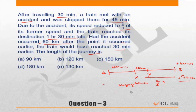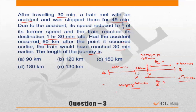First, there is a stoppage of 45 minutes after the accident at X, and similarly a stoppage of 45 minutes after the accident at Y. The speed after the accident is 2/3 of the original speed S, so the speed in that stretch is 2/3 S. Remembering that speed is inversely proportional to time, let us try to solve this question.